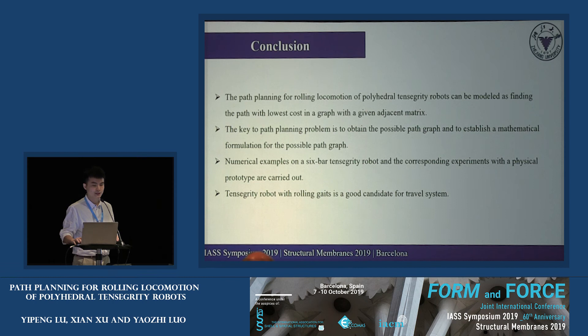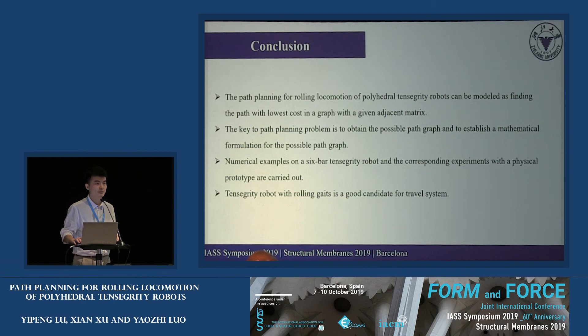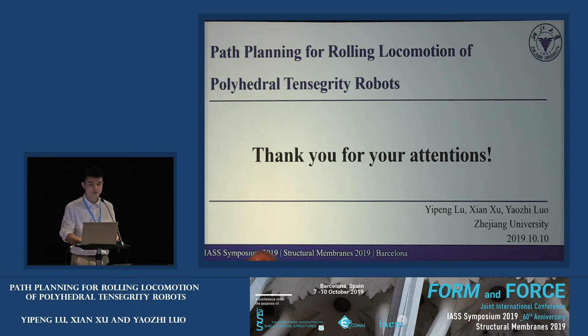In conclusion, path planning of rolling locomotion of polyhedral tensegrity robots can be modelled as finding the path with the lowest cost in a directed graph. The key particular challenge is to obtain the possible path graph and establish a mathematical formulation. Numerical examples on a 6-bar tensegrity robot and corresponding physical prototype experiments were carried out. We believe that tensegrity robots with rolling gaits are good candidates for travel systems.